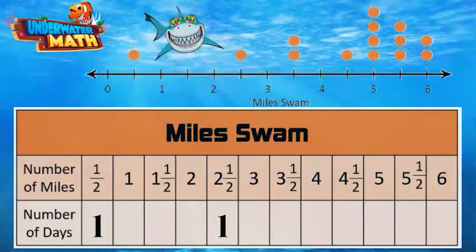There are two dots above the three and a half mile mark, so you swam three and a half miles on two days. There is one dot above the four and a half mile mark, so you swam four and a half miles on one day. Here's where it gets good.